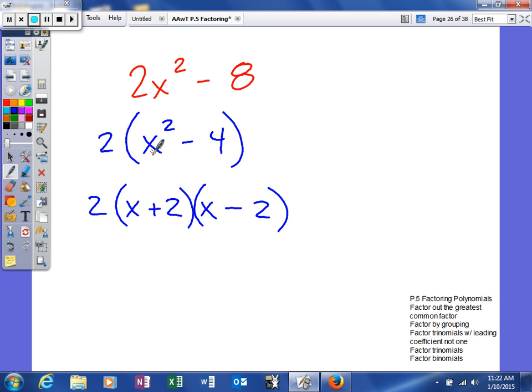Because this times this is this, negative 2x, positive 2x will cancel. This times this is negative 4. But then 2 times this is this, and then 2 times negative 4 is negative 8. So, if you factor something out, make sure it stays in your problem all the way to the end.